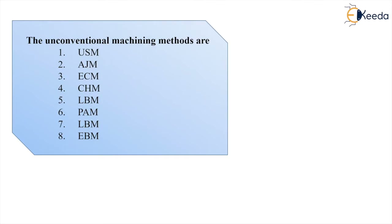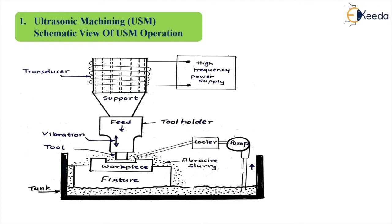In this video we are going to understand about USM — that is ultrasonic machining. Here is the schematic of ultrasonic machining. There is the abrasive slurry tank, a fixture on which the workpiece is mounted, and the tool given with a feed force. The tool is vibrating and also fed with the feed force. You can see the gap between the tool and workpiece — in this gap we apply the abrasive slurry. These are the transducers that produce the vibrations of the tool.